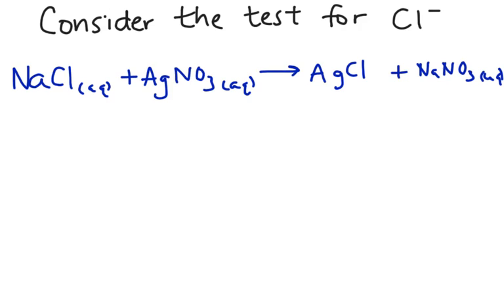Now you can check the solubility of these, and you'll find out that sodium nitrate is soluble, aqueous. Silver chloride, however, is a solid. So what that means is, when you saw a white precipitate, that white precipitate was really AgCl.